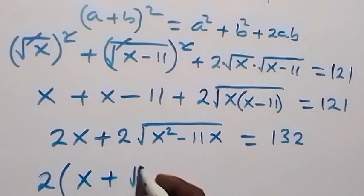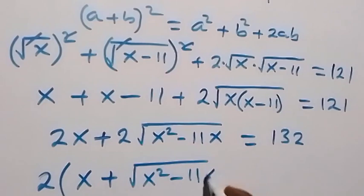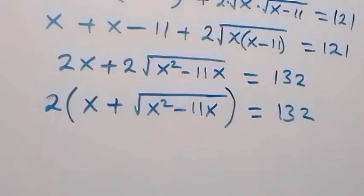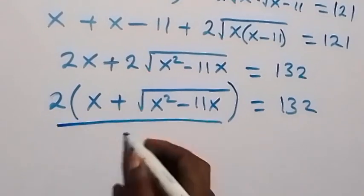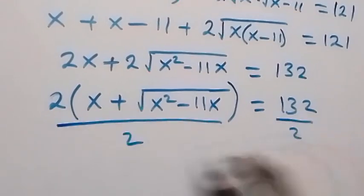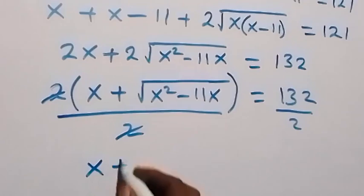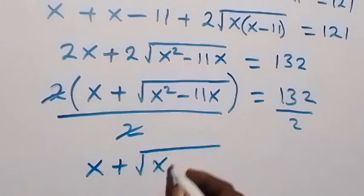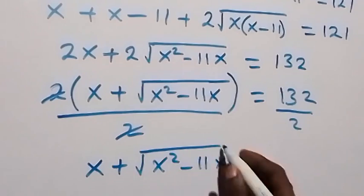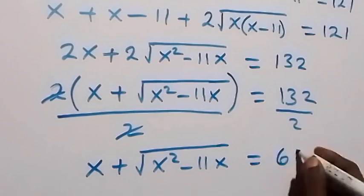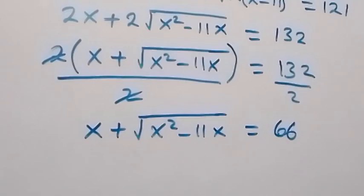Rearranging, we get 2x plus 2 root of x squared minus 11x equals 132. Dividing through, we have x plus root of x squared minus 11x equals 132 divided by 2, which is 66.